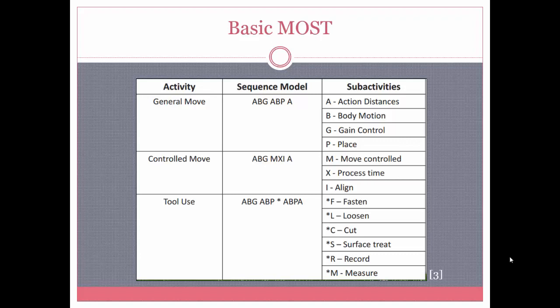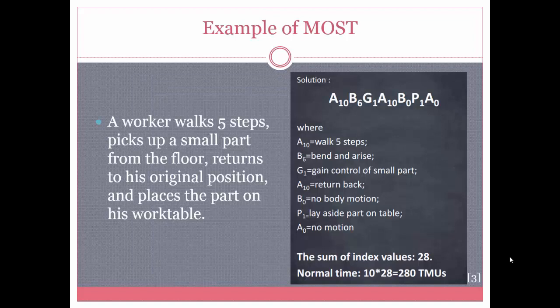The first three letters, ABG, represent the reach; the second part, ABP, is the get; and the final A is for removing or releasing. For example, a worker walks five steps, picks up a small part from the floor, returns to his original position, and places the work on his work table. The solution uses the sequence ABG–ABP–A, where A10 is used when talking about walking five steps, bend and raise is B6, gain control is G1, and so on. The sum of all indexes for this sequence is 28, and to find the TMU you simply multiply the index values by 10 to get your answer.